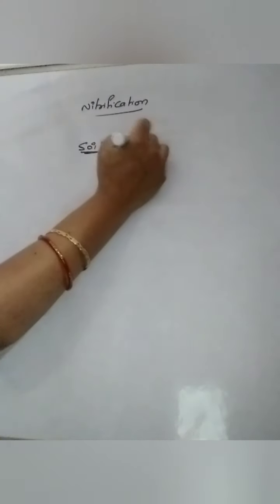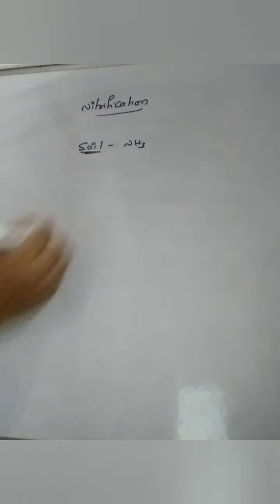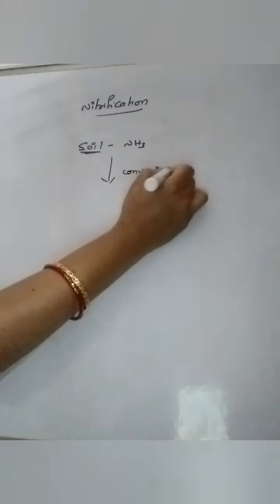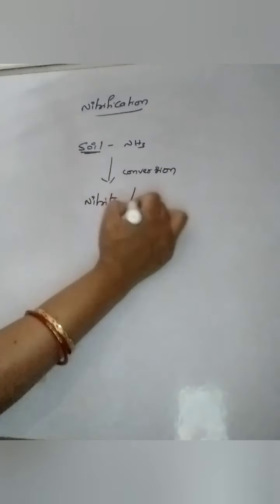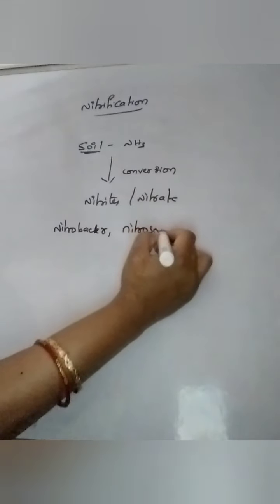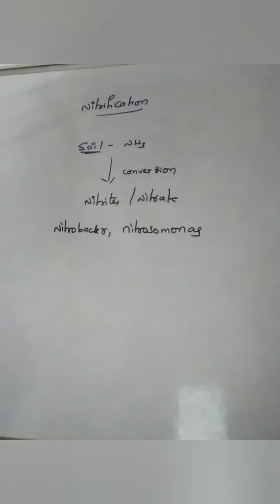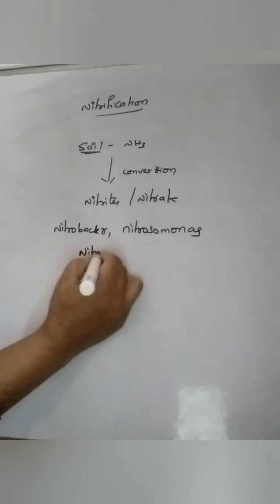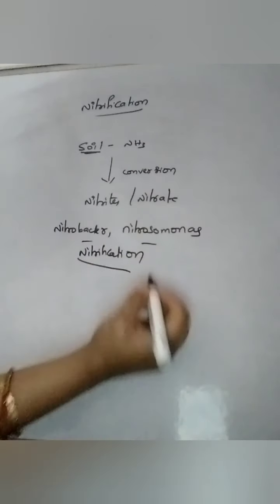Nitrification — what is this? Most of the ammonia decomposed in the soil will be converted into nitrite or nitrate form by nitrifying bacteria. For example, Nitrobacter or Nitrosomonas will carry out this conversion. The conversion of ammonia into the nitrite and nitrate form is called nitrification. These bacteria are chemosynthetic bacteria, that is chemoautotrophs.